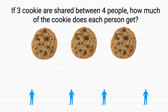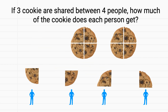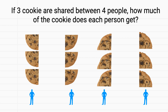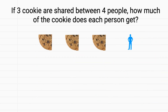We could go through a similar process. We'll start by cutting each of the cookies into four pieces. Then we'll give one piece from the first cookie to each person, one piece from the second cookie to each person, and one piece from the third cookie to each person. So each person has this one-fourth, this one-fourth, and this one-fourth.